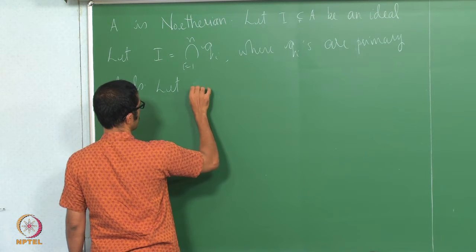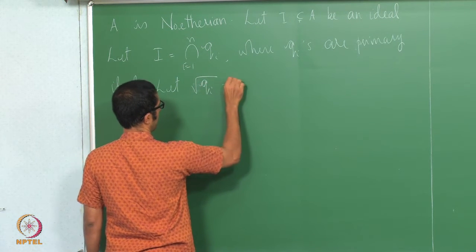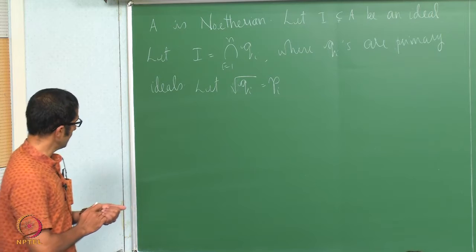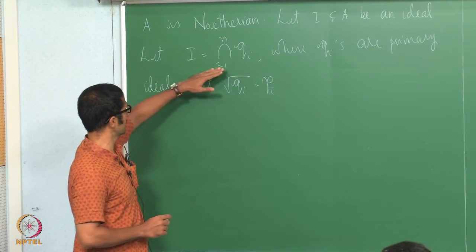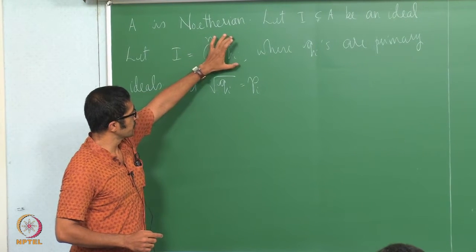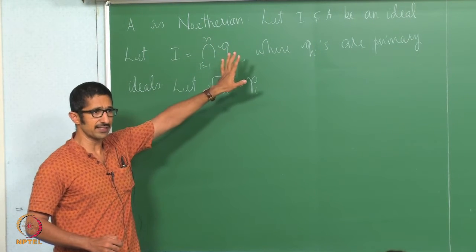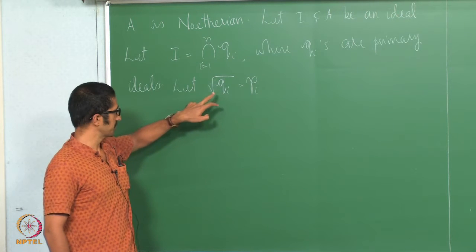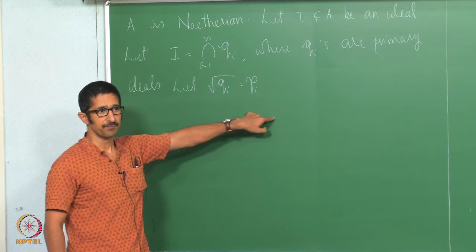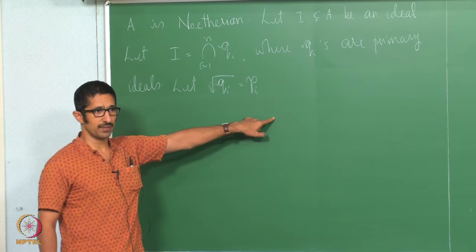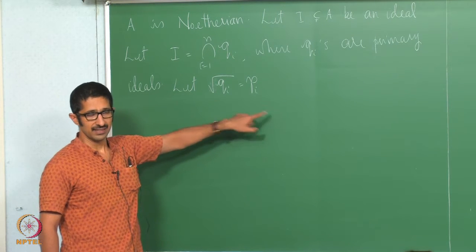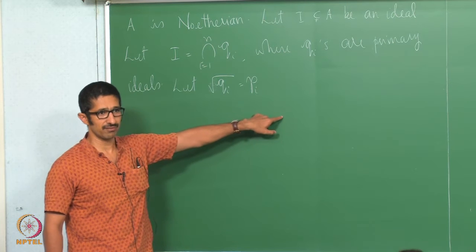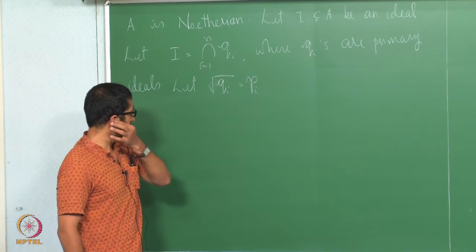Let the radical of q_i be equal to p_i, a prime ideal. What we have already seen is that q_1, q_2 up to q_n need not be uniquely determined, because yesterday we saw that (x^2, xy) has decomposition (x) ∩ (x^2, y) and another decomposition is (x) ∩ (x^2, xy, y^2). So the components need not be uniquely determined.